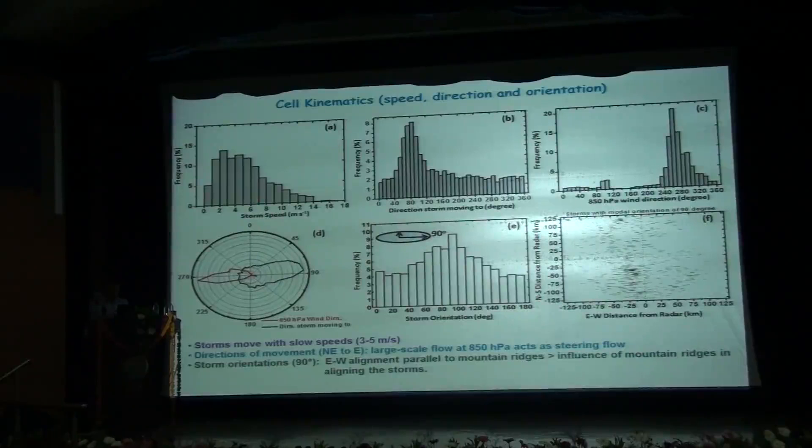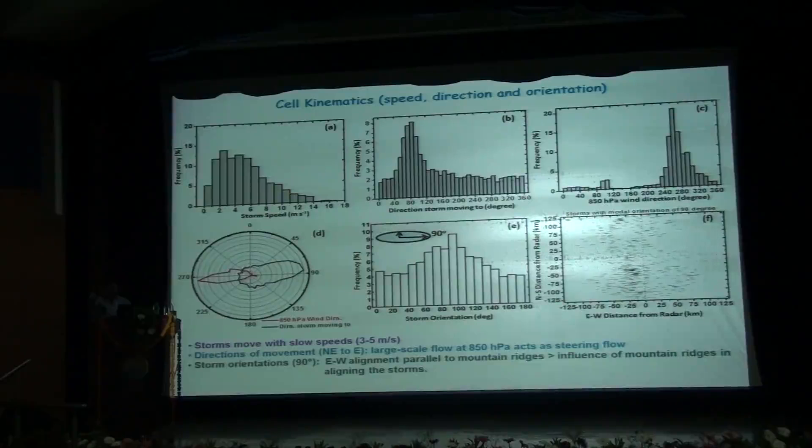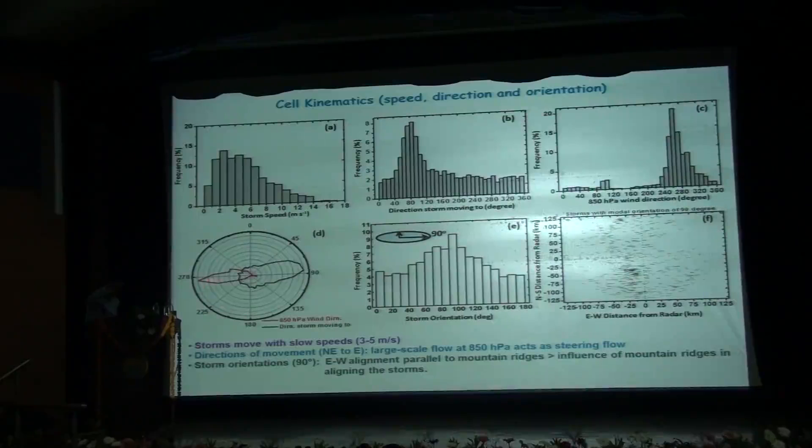Now we wanted to investigate what makes the storm move in that direction. So we analyzed the 850 hectopascal low level flow from the ECMWF reanalysis datasets. These two figures have been summarized in this wind rose diagram where we see that the large scale flow at low levels is from west to east which acts as a steering flow for the storms to get advected from west to east.